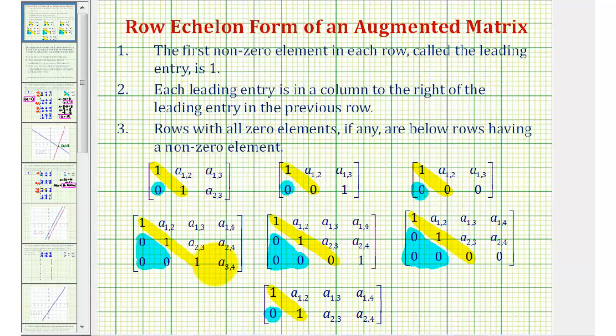Each leading entry or 1 is in a column to the right of the leading entry or 1 in the previous row. And number three, rows containing all zero elements, if any, are below rows having a non-zero element. So again, there are several examples given here below of matrices in row echelon form.